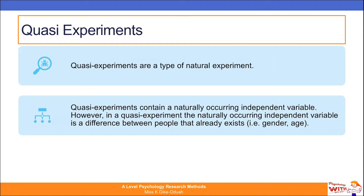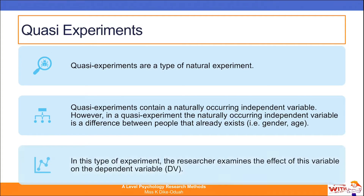Some may argue that you can train yourself to become left-handed or right-handed, and being a drug addict is an environmental choice. But gender and age are qualities people are born with — no one has had the chance to manipulate them. In this type of experiment, the researcher examines the effect of this variable on their dependent variable.